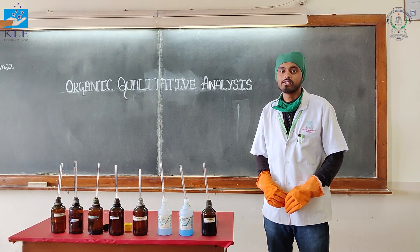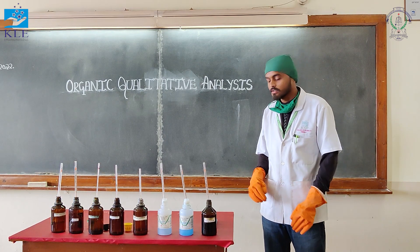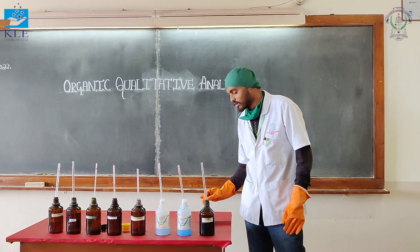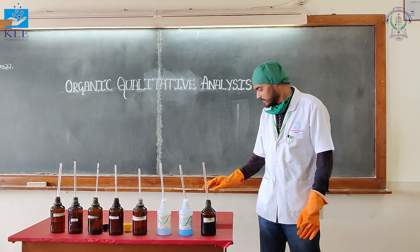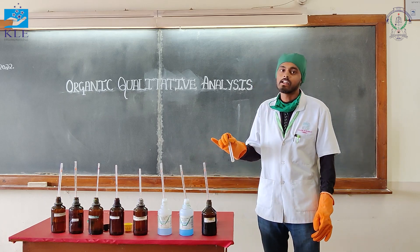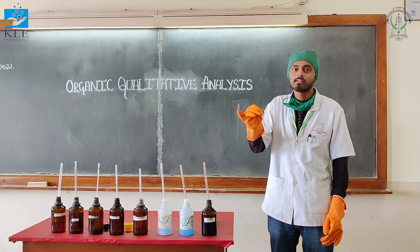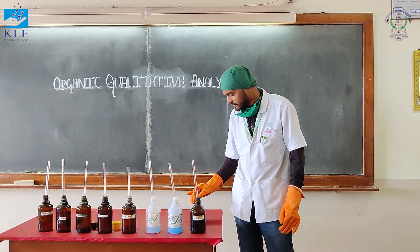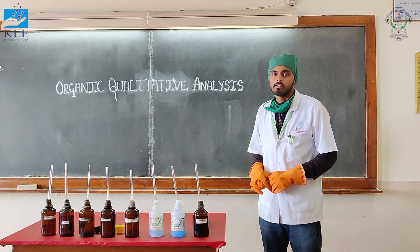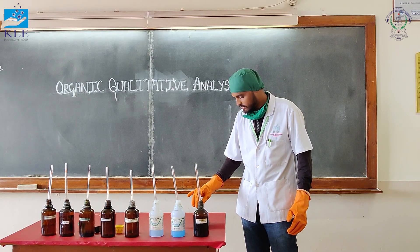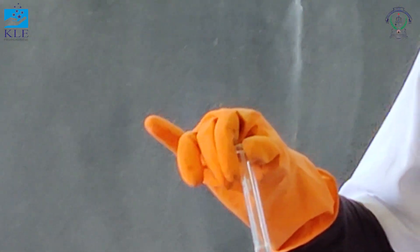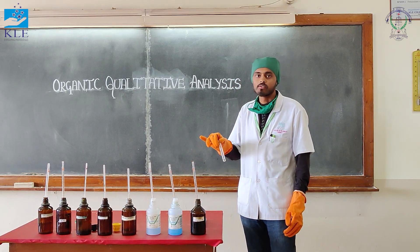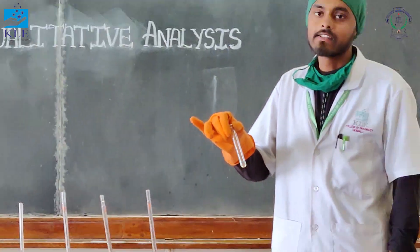The next test is the solubility test. Take the substance and add water — it is insoluble, therefore Group 1 and Group 2 are absent. Add dilute HCl — it is insoluble, therefore Group 3 is absent. Add dilute NaOH — it is insoluble, therefore Group 4 is absent. Add concentrated H₂SO₄ — it is soluble, therefore Group 5 is present.